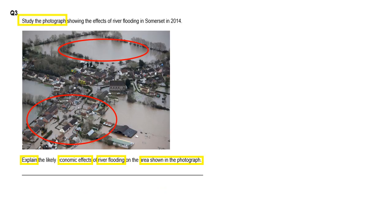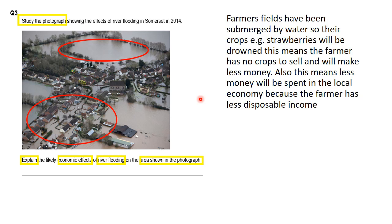Using the image, the first two most obvious things flooded are fields in the background — which are quite rectangular and therefore probably a farmer's field — and also houses or residences being flooded. You might also argue there's a school in the middle, and you could go for roads and cars being flooded. For the farmer's field: farmer's fields have been submerged by water, so their crops — e.g. strawberries — will be drowned. This means the farmer has no crops to sell and will make less money. Always clarify crops or animals with an example; it shows the examiner you know what you're talking about.